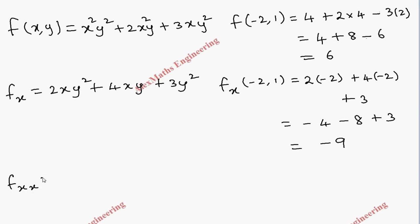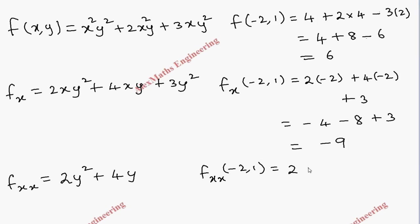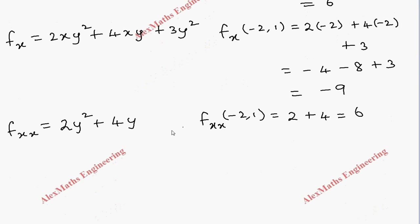Now fxx: differentiating fx again with respect to x gives fxx = 2y² + 4y. Evaluating at (-2, 1): 2(1) + 4(1) = 6. So fxx(-2, 1) = 6. Differentiating once more gives fxxx = 0, so fxxx(-2, 1) = 0.